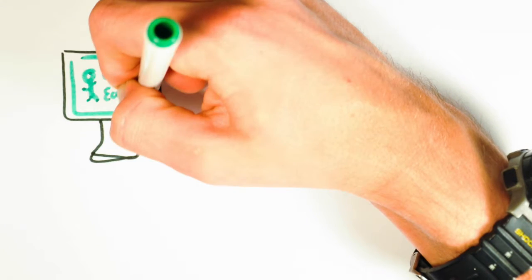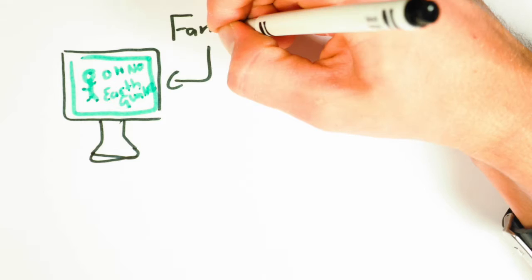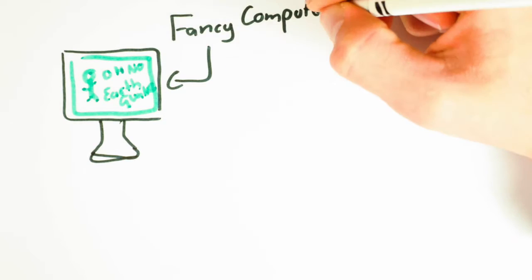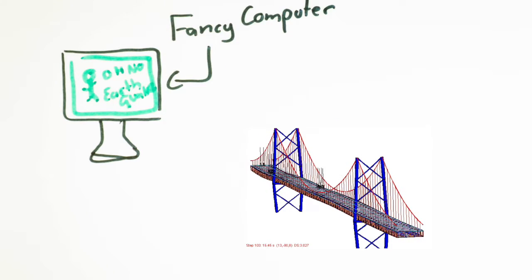To accommodate for variations in dynamic loads, engineers design for maximum live loads using specialized software which can generate many calculations before building materials are even considered.